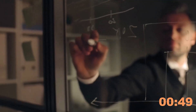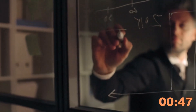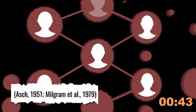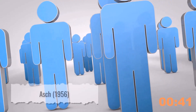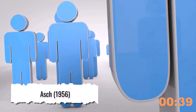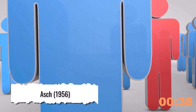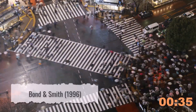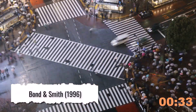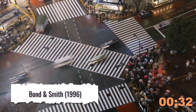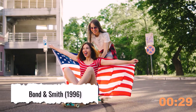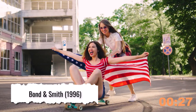Since Asch's experiment, psychologists have delved deeper into the factors influencing conformity. They found that larger groups exert more pressure to conform, and unanimous groups also increase conformity, while any dissent drastically reduces it. Conformity rates are also higher in collectivistic cultures like Korea and Japan, which emphasize group harmony, compared to individualistic cultures like the USA and Britain.